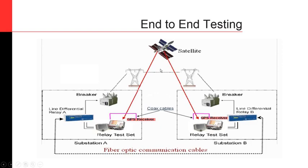The only way to guarantee both test sets begin the test at the same time — which is as close to a real-case fault simulation as possible — is through a common time source. When a real fault occurs, it propagates to both ends of the line at the speed of light, reaching one end perhaps a few microseconds before the other. When you're talking about power system synchronization, that means the frequency is the same across the system, but it does not mean there is a common time source I can use to know when to begin the test at each end.